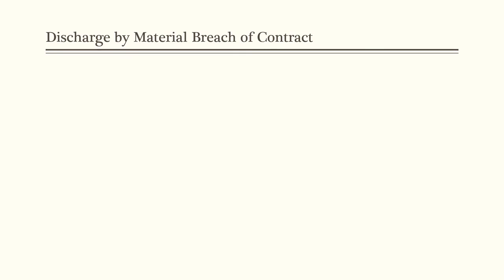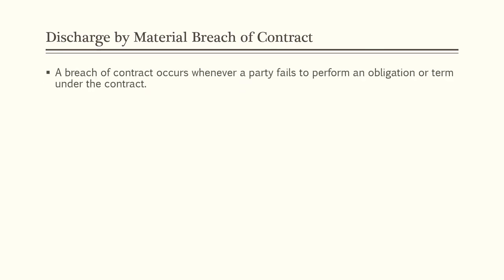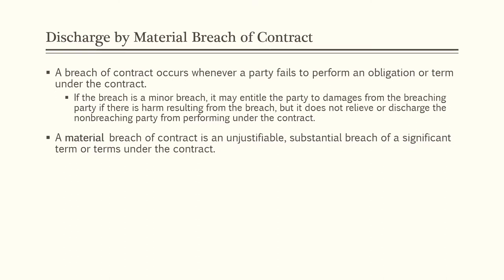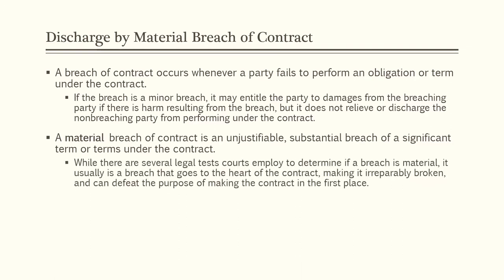The next way that a contract can be completed or ended is discharge by material breach of contract. A breach of contract occurs whenever a party fails to perform an obligation or term under the contract. If the breach is a minor breach, it may entitle the party to damages if there is harm resulting, but it does not discharge the non-breaching party from performing. A material breach is an unjustifiable, substantial breach of a significant term or terms under the contract, usually a breach that goes to the heart of the contract.